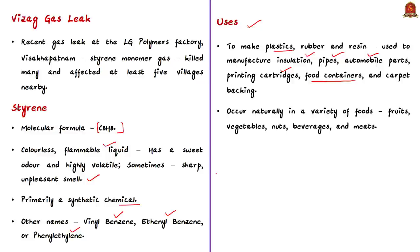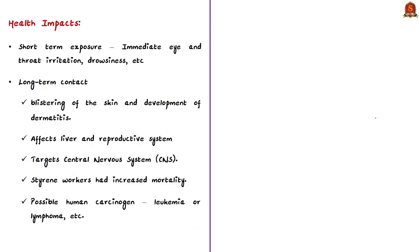Know that low levels of styrene also occur naturally in a variety of foods such as fruits, vegetables, beverages, and meat products. Short-term exposure to styrene causes immediate eye irritation, throat irritation, and even drowsiness. Long-term contact with styrene results in blistering of the skin and development of dermatitis, and in some cases it has effects on the liver and reproductive system.